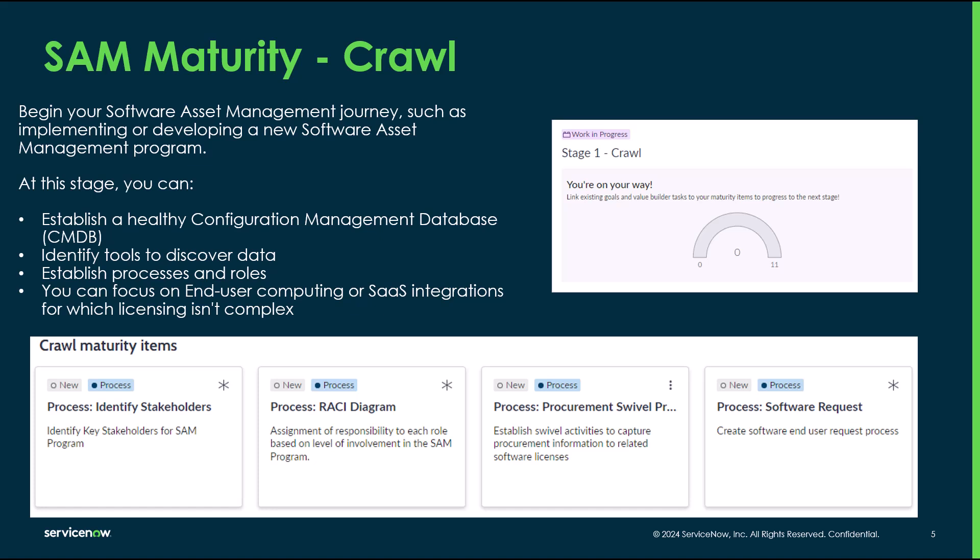You also definitely want to start thinking about establishing processes and defining the roles — who's going to do what, who is responsible for what, and what existing SAM processes are in the organization today. You want to think about doing things in the crawl phase that aren't as complex, so you can start driving some value. Maybe focus on end user computing software or SaaS integrations while you're getting the rest of the discovery tools set up, because a lot of times those licenses aren't as complex. This phase is really about getting your instance ready to start using SAM. If you're a more mature customer, many of these items may already be completed, but it's definitely still worth reviewing each one, as you may identify some potential gaps.